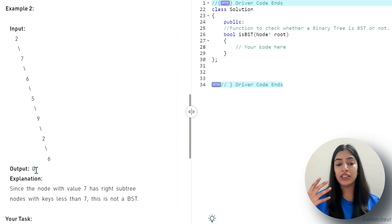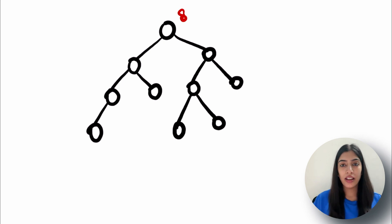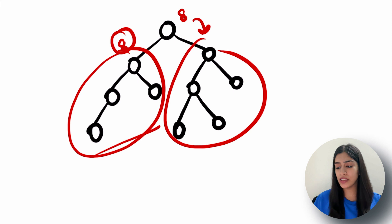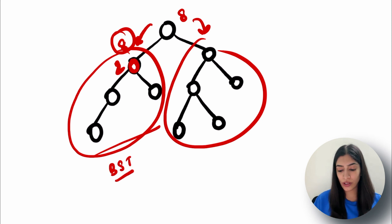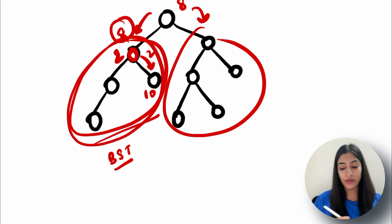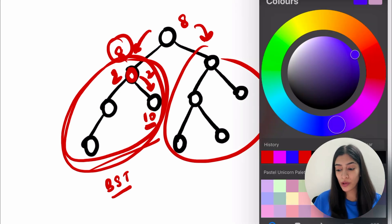Pause and think about a possible solution yourself. Suppose the root is 8. You might think: pass 8 to the left subtree, check all values are less than 8; pass 8 to the right subtree, check all values are greater. Say the left child is 2 — two is less than 8, it works. Then you check the left subtree of 2 as a BST. Suppose its right child is 10 — 10 is greater than 2, so that returns true.